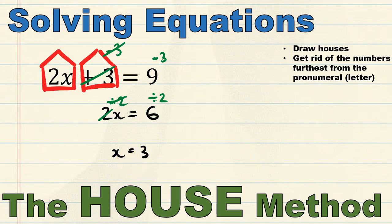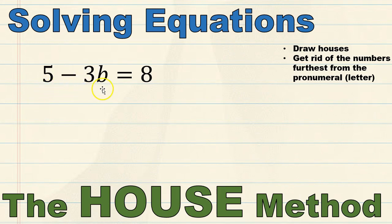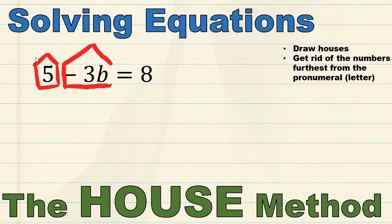Let's move on to a harder equation: 5 minus 3b equals 8. I'm going to draw my houses around each term — I've got the term 5 and then my other term is 3b, being careful to put my house around the minus sign, so it's actually minus 3b. After drawing our houses we look at our pronumeral b. We can see that our number negative 3 lives inside the same house as b.